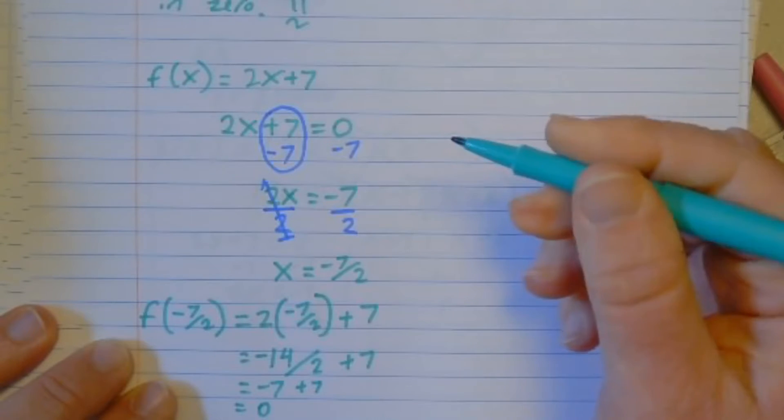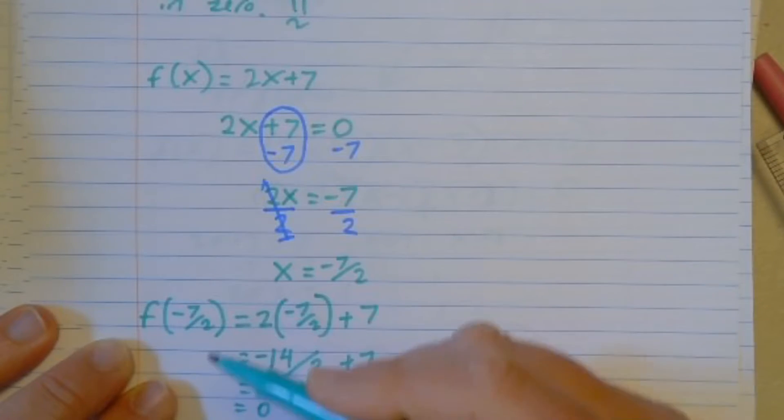So the zero of this function, the number I can put in to get 0 out, is negative 7 halves.